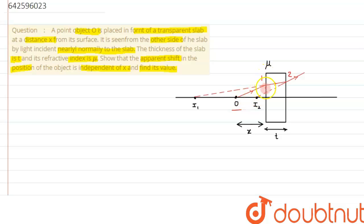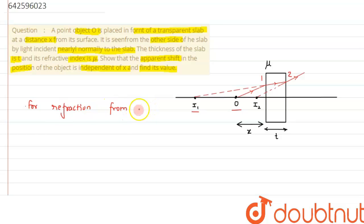When light refracts at the first surface, an image is formed which we call I1. When it refracts at the second surface, the image formed is called I2. We are interested in finding the apparent shift, that is the distance between O and I2. For this, we use the formula for refraction of a light ray from a spherical surface, from which we will derive the formula for refraction from a plane surface.